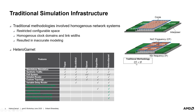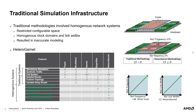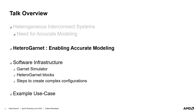This is where Heterogarnet comes to the rescue. It adds support for heterogeneous routers, links, and multi-frequency domain crossings, link widths, and several other features to the widely popular Garnet network model. For our example of 2.5D integrated architecture, Heterogarnet would allow tuning the interposer clock domain individually, thereby enabling accurate modeling. I will briefly describe the key features of Heterogarnet before deep diving into the software infrastructure of Garnet as well as Heterogarnet.